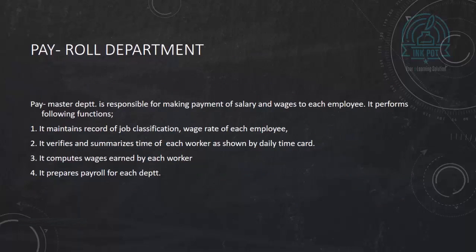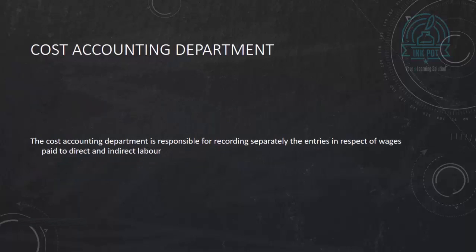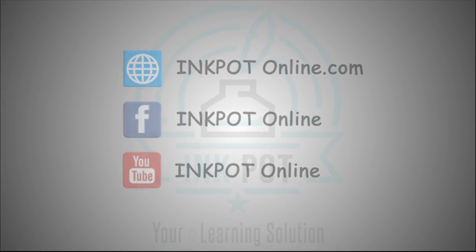Next is the payroll or paymaster department. The paymaster department is responsible for payment of salaries and wages to the employees on time. It is concerned with the computation of wages earned by each worker and then pays those salaries and wages to the workers. The last is the cost accounting department, which is responsible for recording all entries in respect of wages paid to direct or indirect labor. So the recording part is done by the cost accounting department.